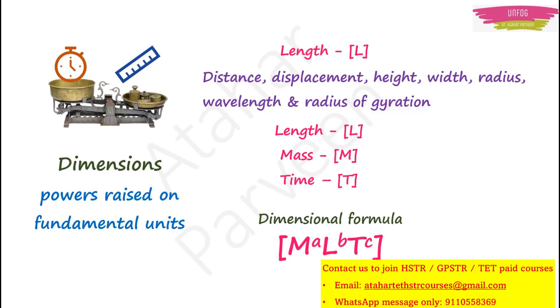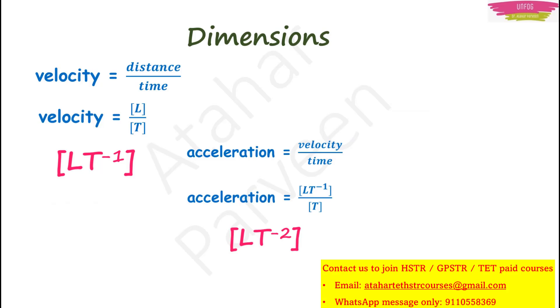You write it as M raised to A, L raised to B, T raised to C, where A, B and C, they are the powers which are raised on this fundamental unit. For example, we know that velocity is equal to distance upon time. Distance is length, so we write as L. Time is T, so we write as T. Now, dimensional formula for this velocity will become L T raised to minus 1 because time is in denominator.